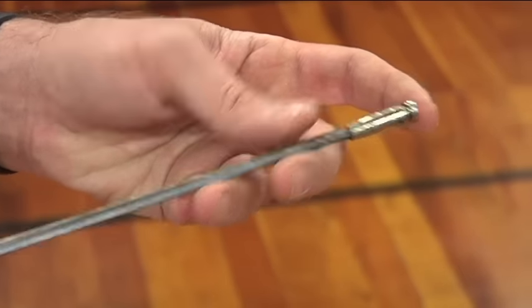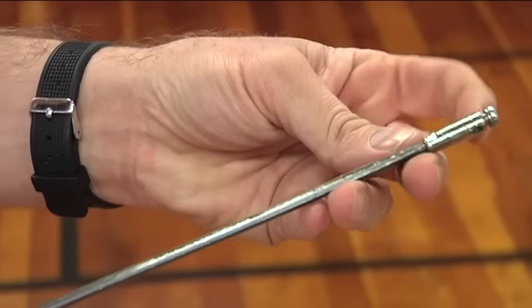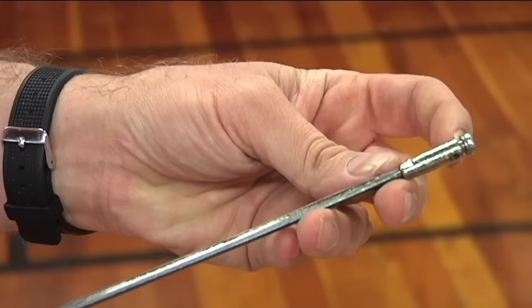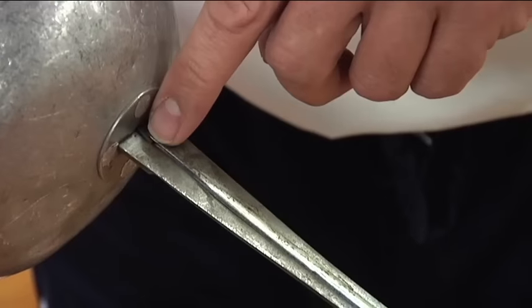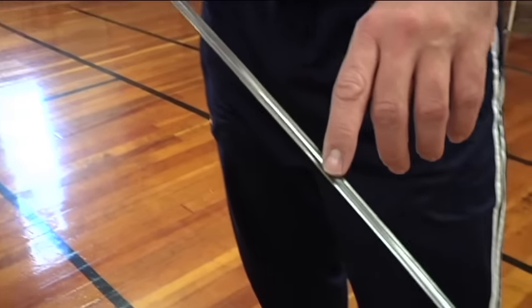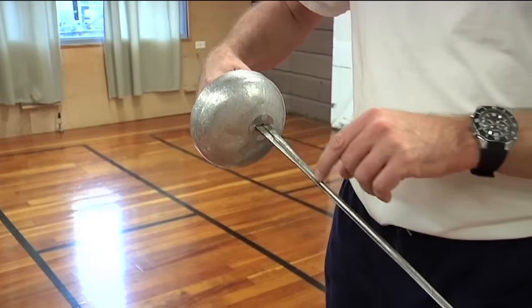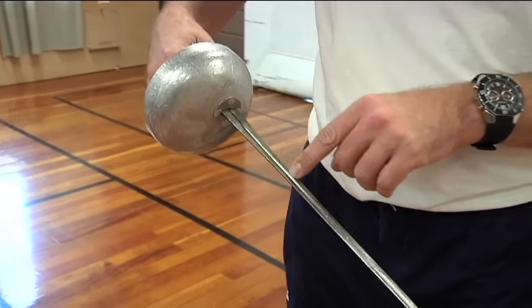At this end of the epee we have a small button and that button is called a tip. This tip is connected to a wire and what's interesting about the epee is there's a groove that runs down the blade and that groove is where we essentially glue the wire into the blade and it runs all the way down through the bell guard.